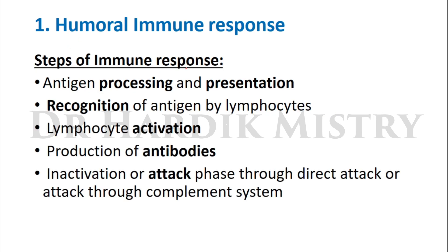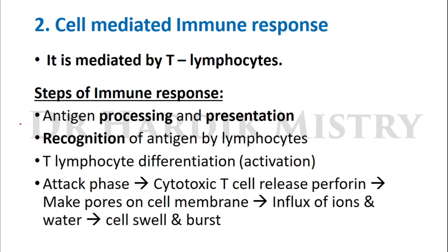The steps of humoral immune response are: antigen processing and presentation, recognition of antigen by lymphocytes, lymphocyte activation and production of antibodies, and the activation or attack phase — through direct attack or attack through the complement system.